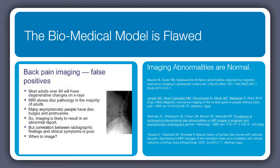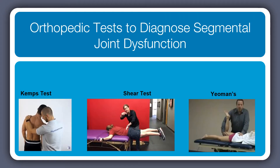Getting into it: in the clinic, we'll often do orthopedic and neurological tests to determine if you have segmental joint dysfunction. Some of the tests we use are the Kemp's test, the Shear test, and Yeomans.